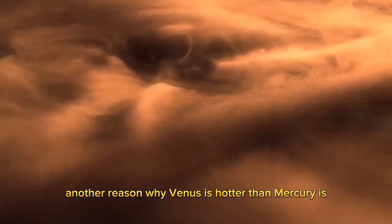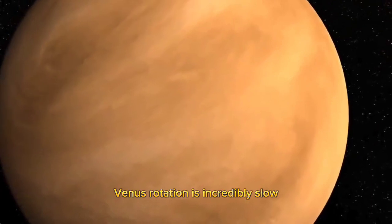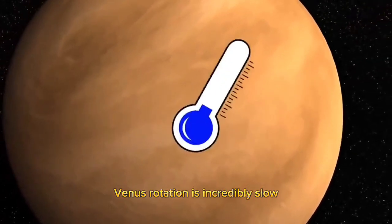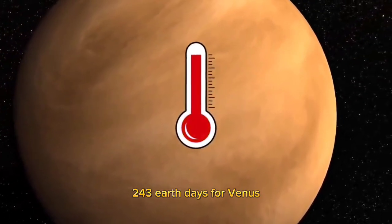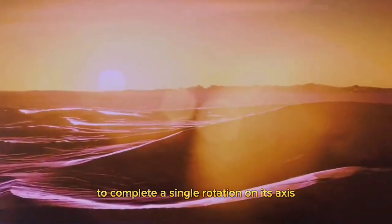Additionally, another reason why Venus is hotter than Mercury is due to its slow rotation. Venus's rotation is incredibly slow, and it takes approximately 243 Earth days for Venus to complete a single rotation on its axis.